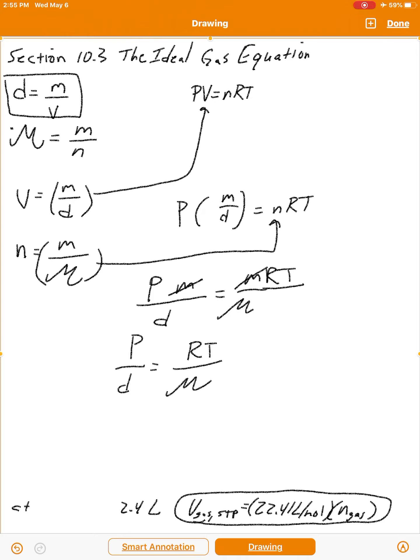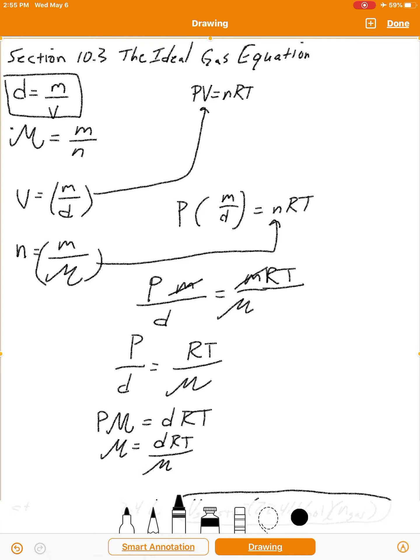So you have pressure times molar mass equals density times the gas constant times temperature. That's a nice little relationship, and what we can do is divide both sides by pressure, and you get this relation. This is a nice relationship.